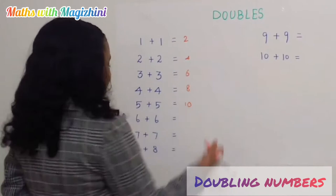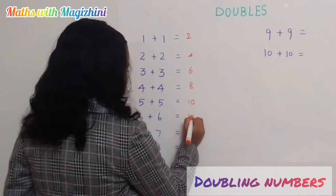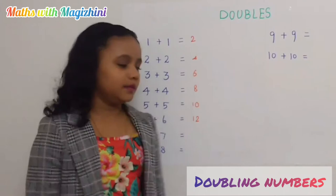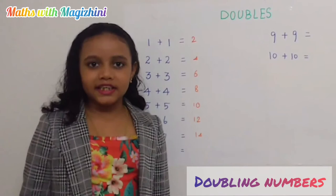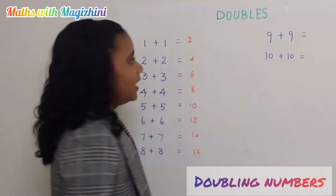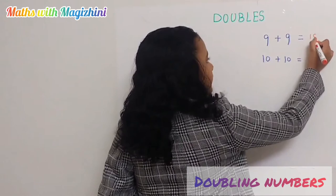6 plus 6 equals 12. 7 plus 7 equals 14. 8 plus 8 equals 16. 9 plus 9 equals 18. 10 plus 10 equals 20.